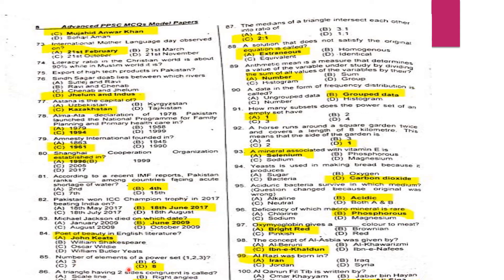MCQ 85: The number of elements of the power set of {1, 2, 3} — a set with 3 elements has a power set of 8 (2³ = 8).